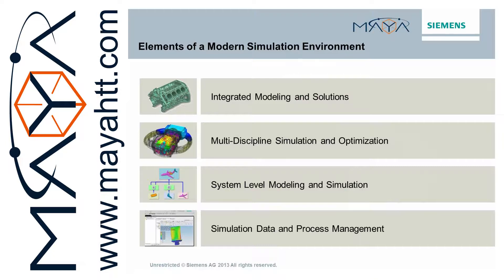The elements of a modern simulation environment can be broken down into four main categories. First, integrated modeling and solutions — this deals with bridging the gap between CAD and CAE analysis modeling, addressing the geometry access and manipulation bottleneck. Second, multi-discipline simulation optimization, which covers the different kinds of analyses that can be achieved within the environment. Third, system level modeling and simulation to evaluate system level performance. And fourth, simulation data and process management to more effectively manage and keep track of your analysis data requirements, processes, and workflows.